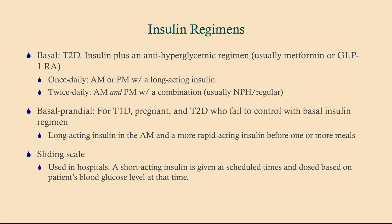Now the basal-prandial or basal-bolus regimen is for type one diabetics, for pregnant patients who need insulin, and for type two diabetics who fail to control with basal insulin alone. What we have here is a long-acting insulin given in the morning and a more rapid-acting insulin before each meal — one or more meals. And then there's the sliding scale, which you've probably seen in the hospital — this is only done in the hospital.